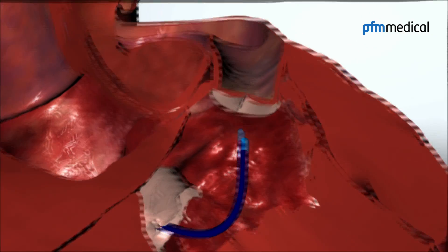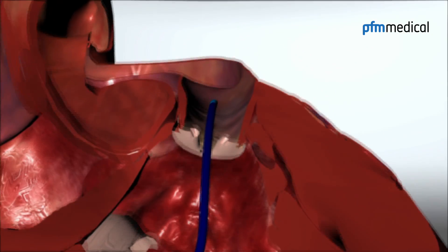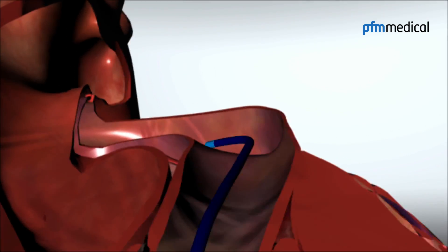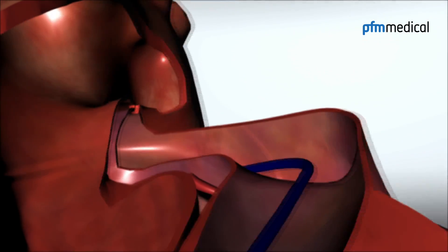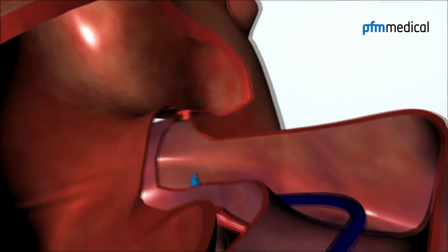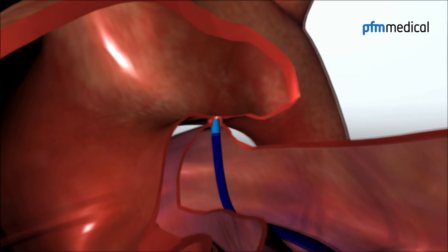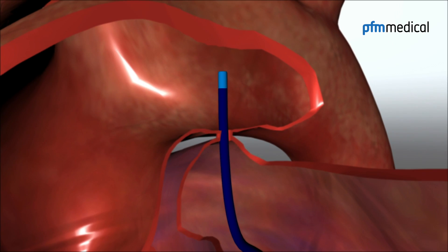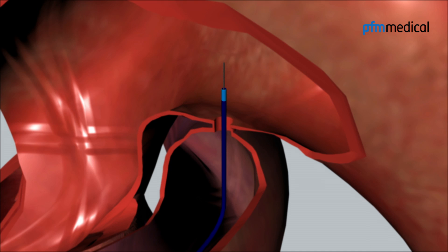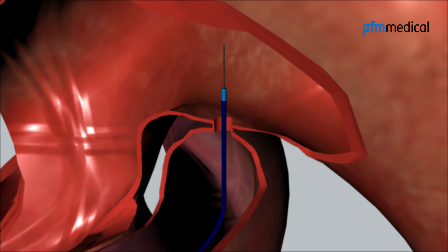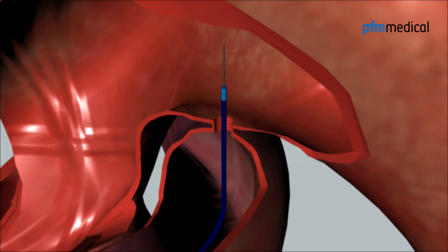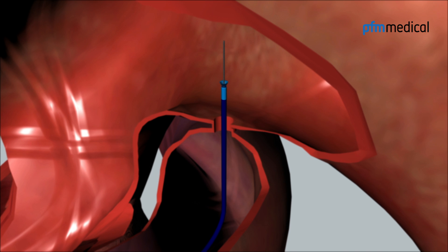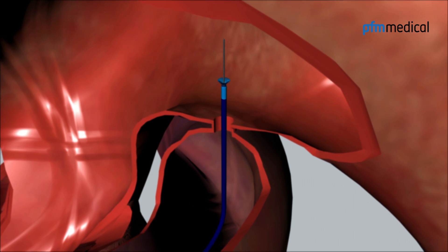An implantation sheath is advanced from the pulmonary artery through the defect and placed in the descending aorta. The occluder is advanced to the distal end of the implantation sheath.